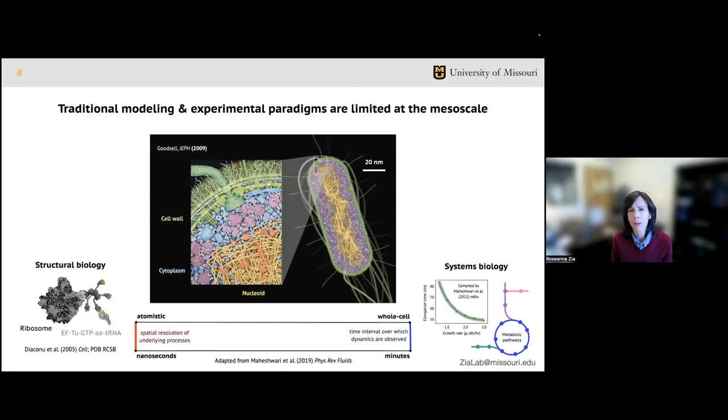Structural biology represents molecules with full atomistic resolution but is limited to very small systems over very short time scales. Systems biology focuses on bulk metrics over minutes, but at the cost of abstracting space away entirely, reducing it to ODEs and a subway map. However, much biological complexity emerges at intermediate length and time scales inaccessible by these traditional approaches.